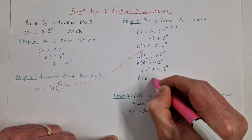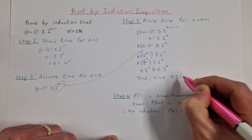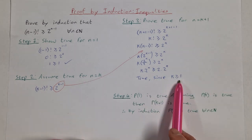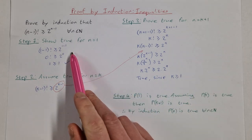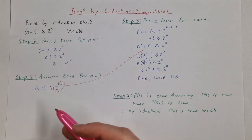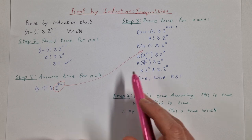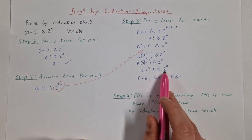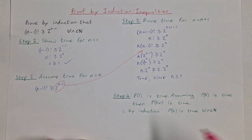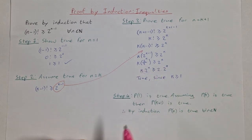This is true, and here's why: since k must be a natural number and we've proven it true for n = 1, the next natural number is 2. We have 2 on the right and k on the left, so if k = 2 they are equal. If k is any number bigger than 2, the left-hand side will be greater than the right-hand side. So this is true, completing step 3.